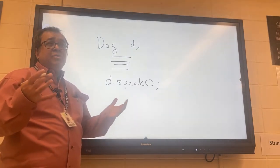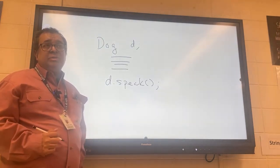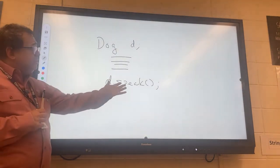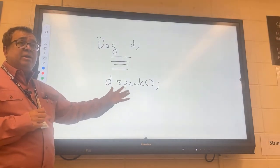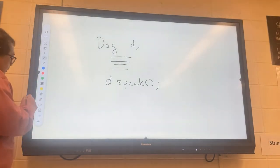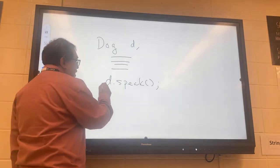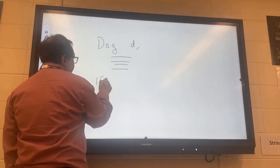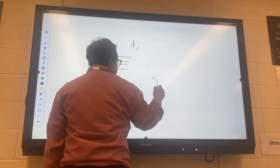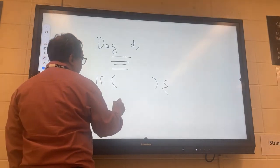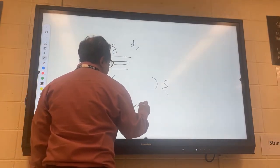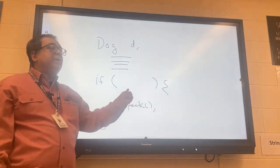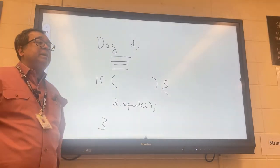The question is, how can we make sure that the dog is going to be there before we call it or not? One way we could do this is we could use an if statement. So if, and then I could put some stuff in here, and then in here I could put D dot speak. Now the next question is, what do I put in here to make sure that there's really a dog there before I have it speak?